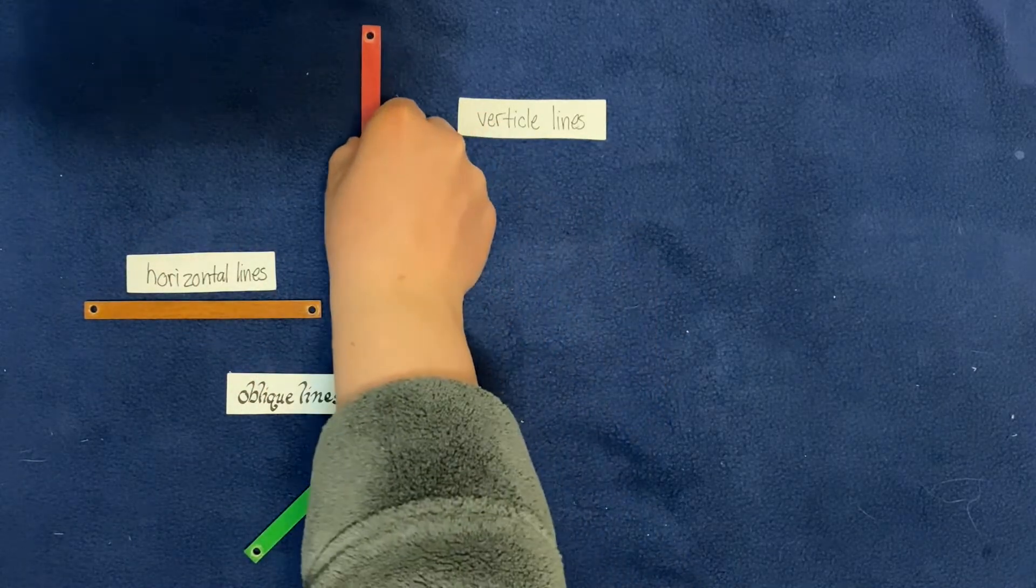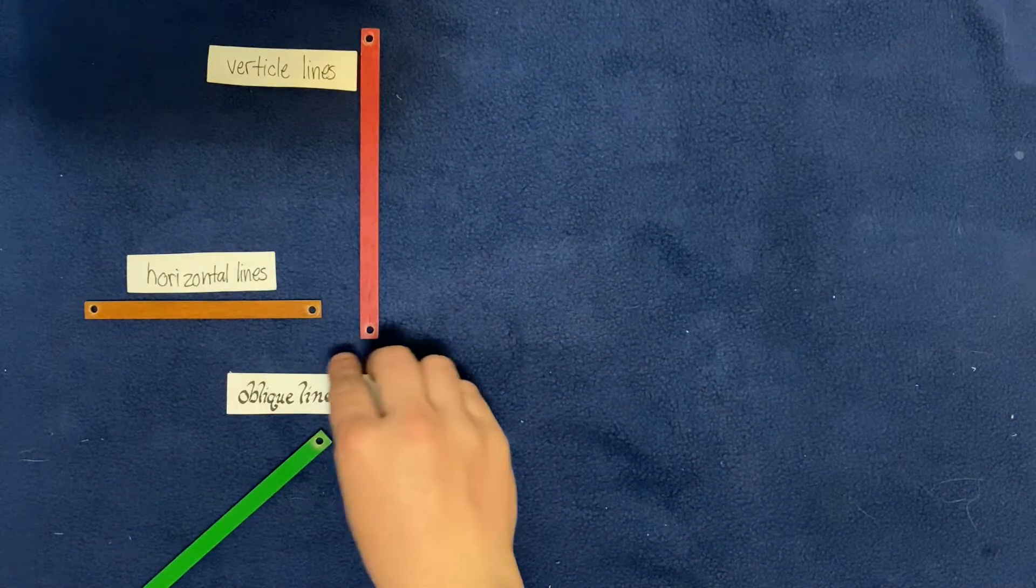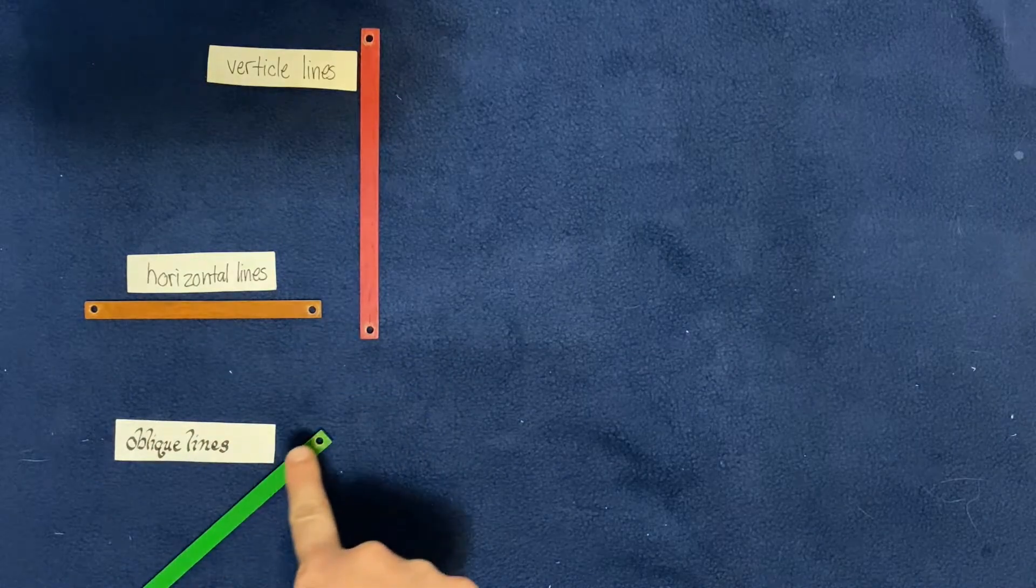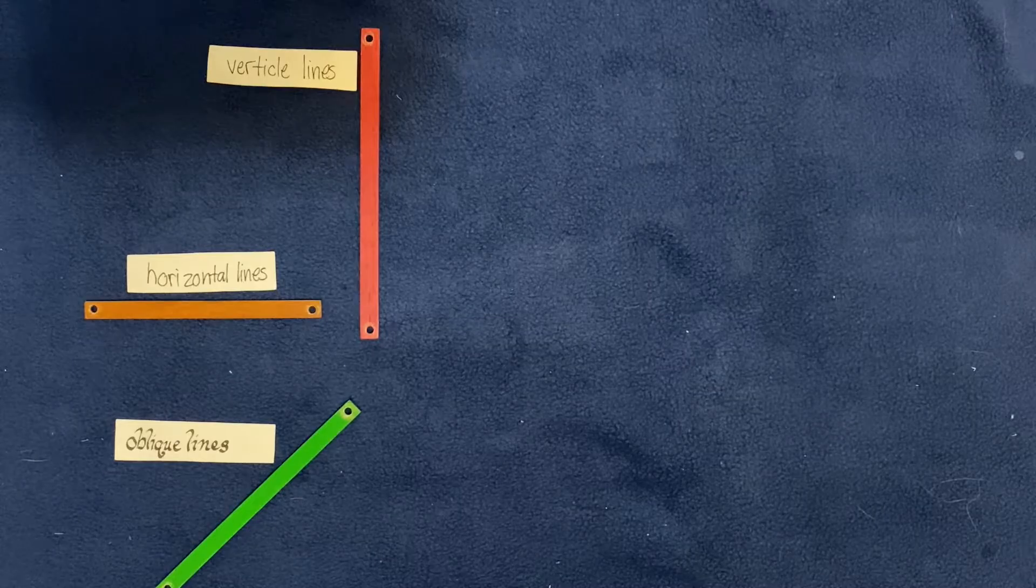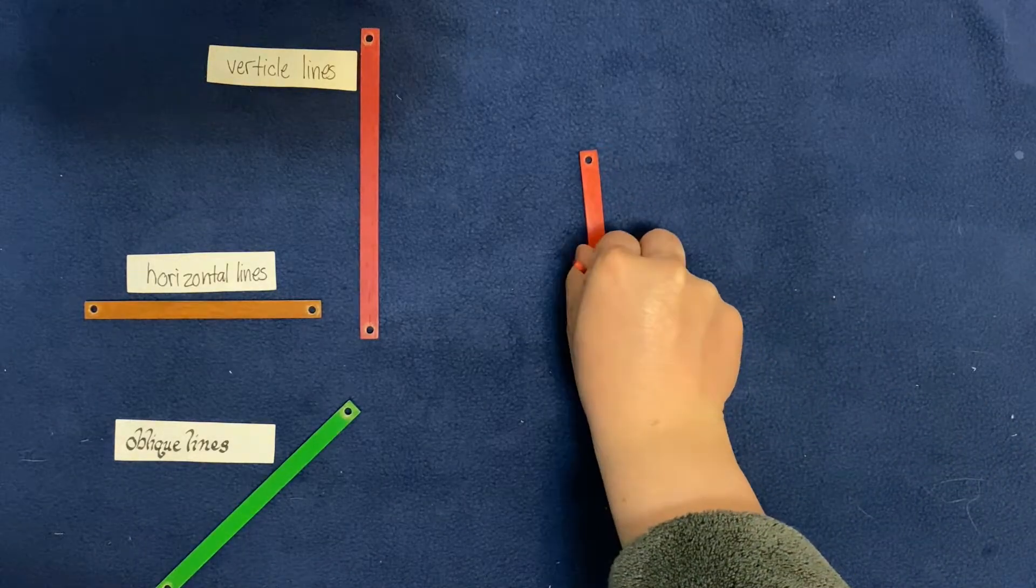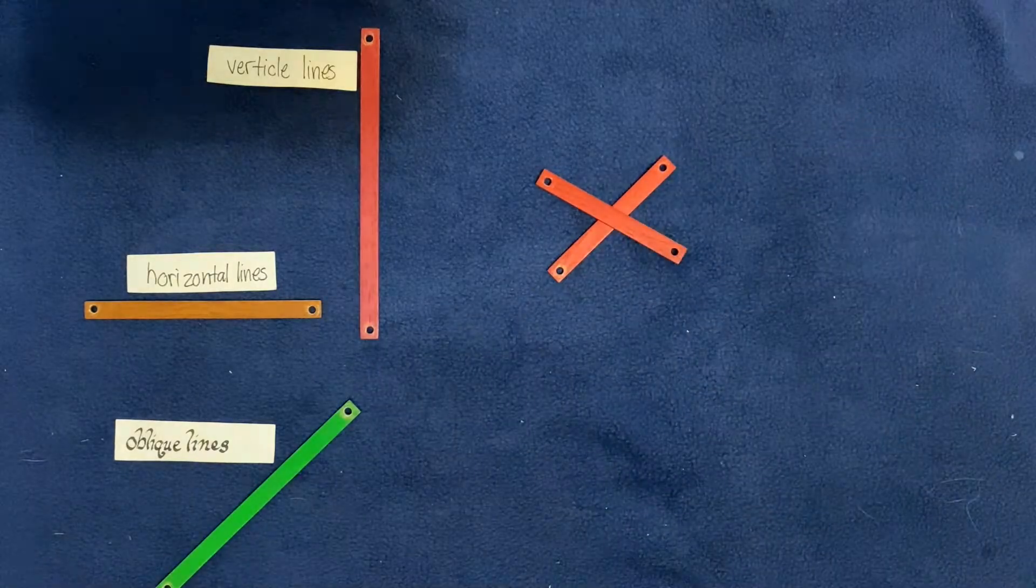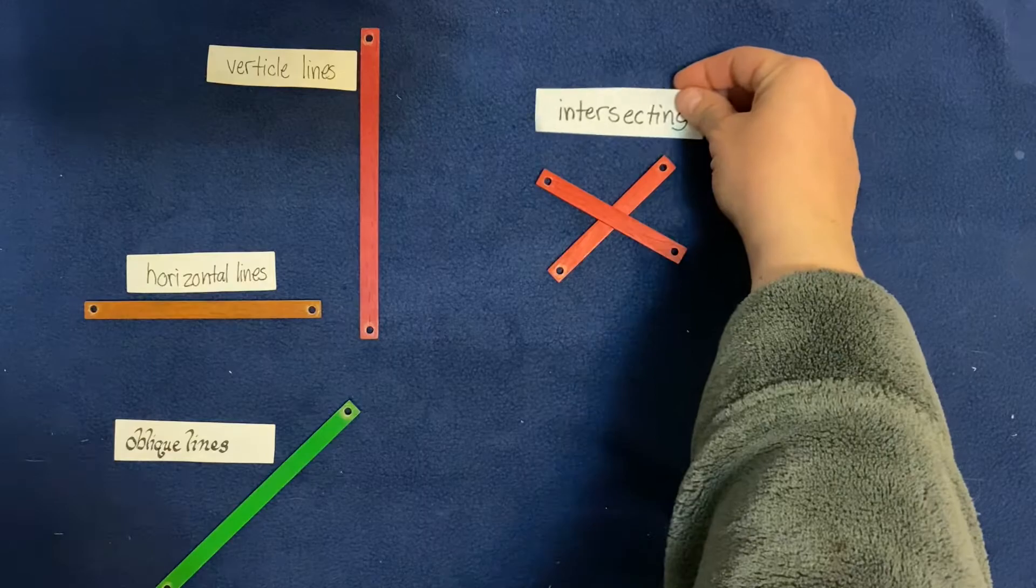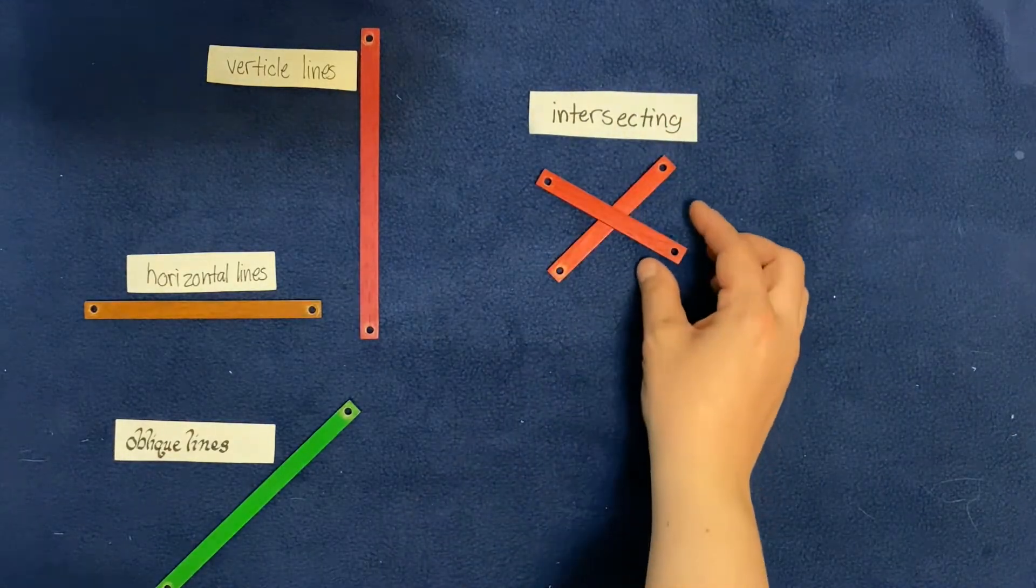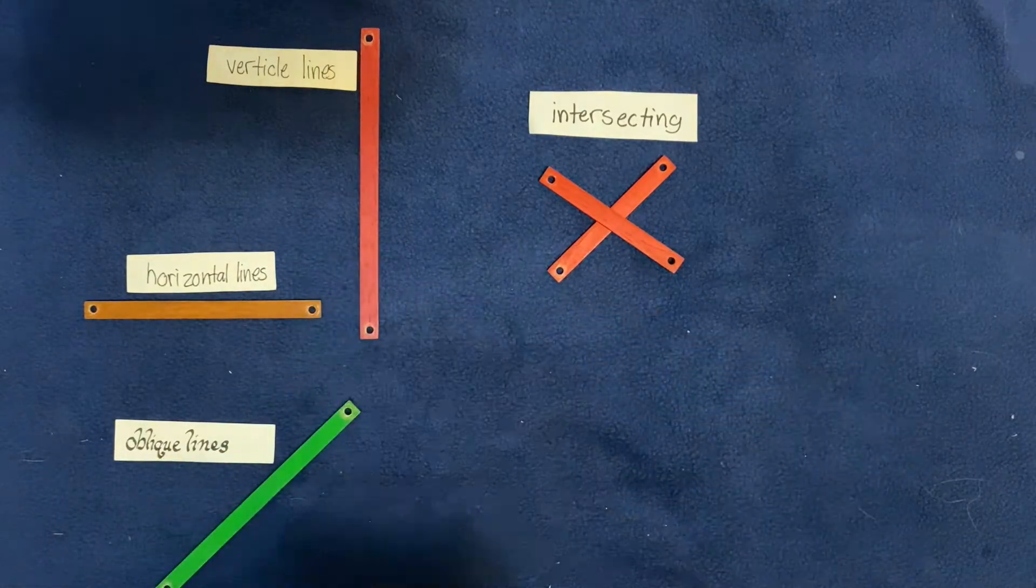I want to look at two other kinds of lines. Here I have two lines that are crossing one another. We call those intersecting lines. They are intersecting one another, kind of like an intersection, you know when two roads come together, make a tee, stop at a red light or a stop sign. Intersecting lines.